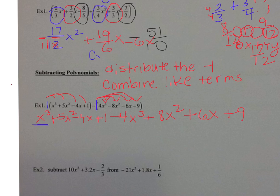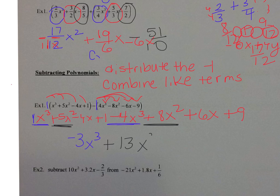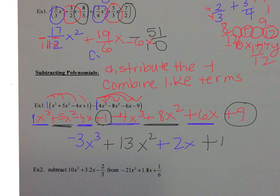I have x cubed — there's really a 1 in front — so 1x cubed minus 4x cubed is negative 3x cubed. Positive 5x squared plus positive 8x squared is 13x squared. Then negative 4x plus 6x is positive 2x. And positive 1 plus positive 9 is positive 10.